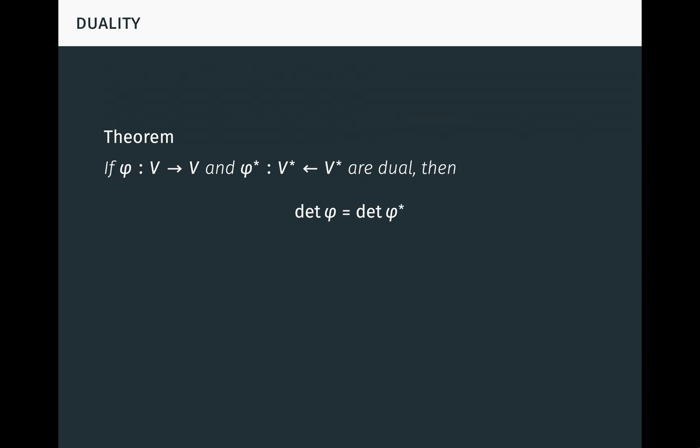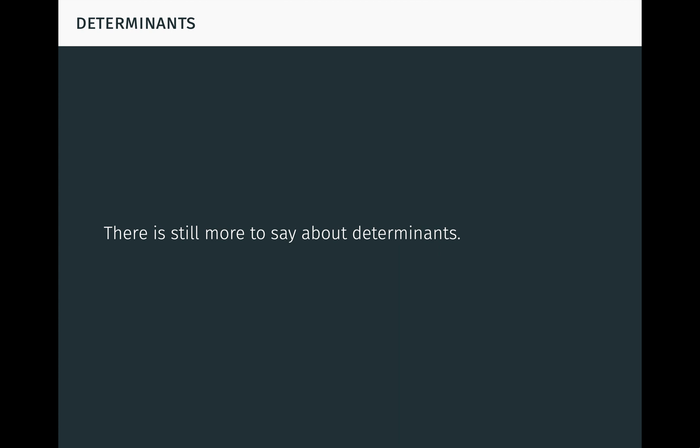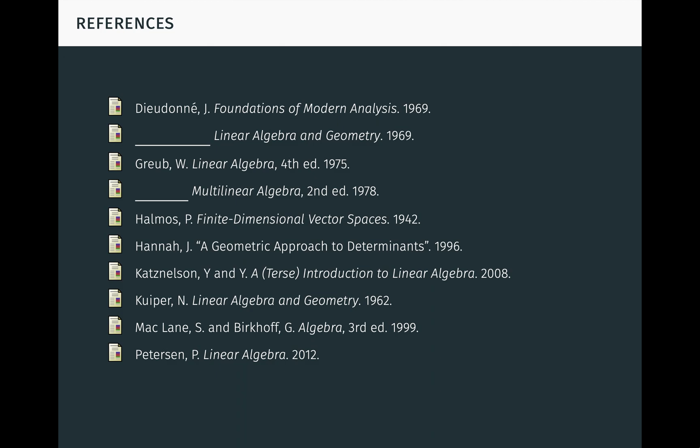Finally, we note that if phi and phi* are dual linear transformations, then their determinants are equal. Intuitively, dual transformations are like mirror images of each other, so they scale volume by the same amount. For more information about dual transformations, be sure to check out my other video on duality in linear algebra. There is still much more to say about determinants, and in future videos I plan to cover more. Here are the references I used in making this video.